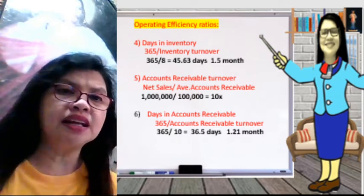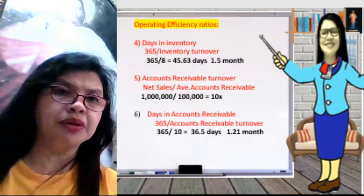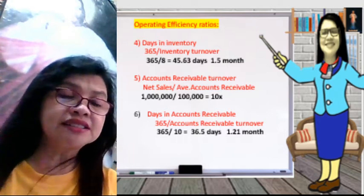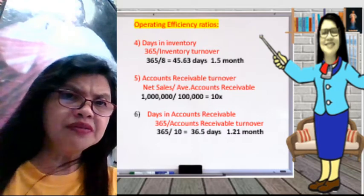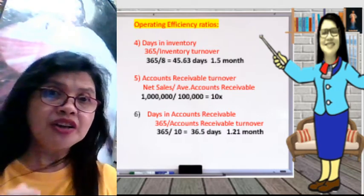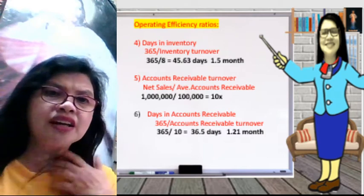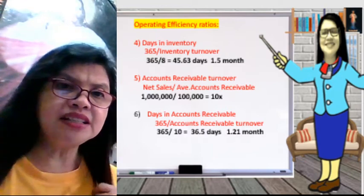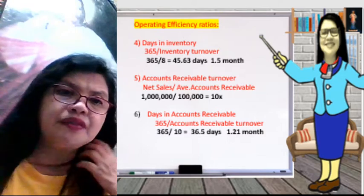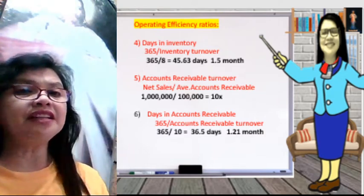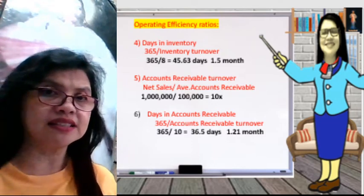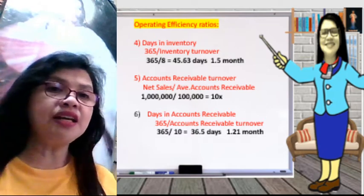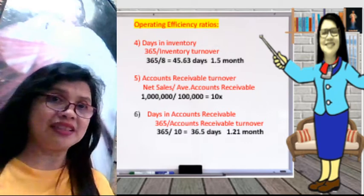Accounts receivable turnover is net sales over average accounts receivable. 1,000,000 divided by 100,000 gives 10 times, meaning you can collect your receivables 10 times a year. Next, we have the days in accounts receivable: 365 divided by 10 gives 36.5 days. That means you collect your receivables every 1.21 months, or at least every month.